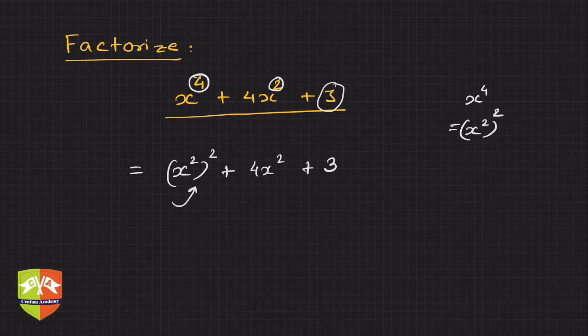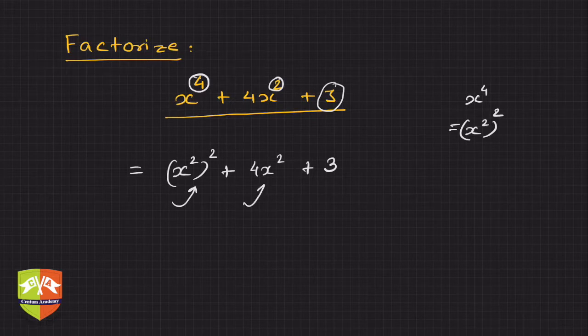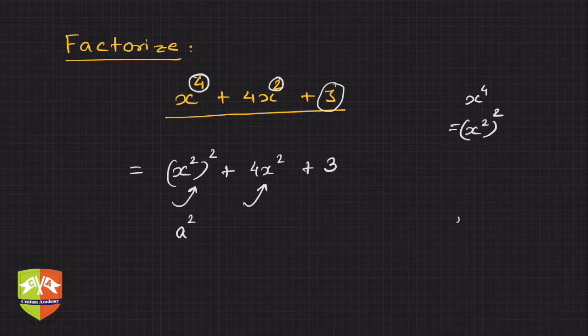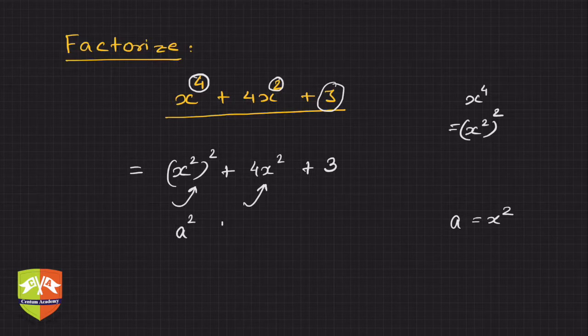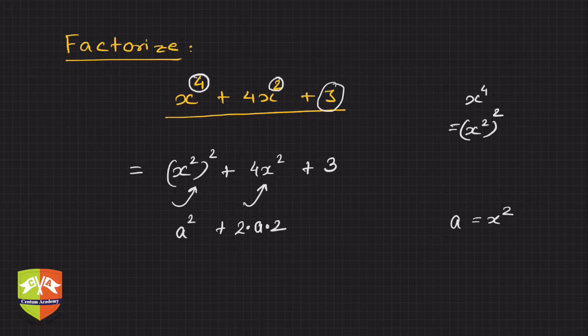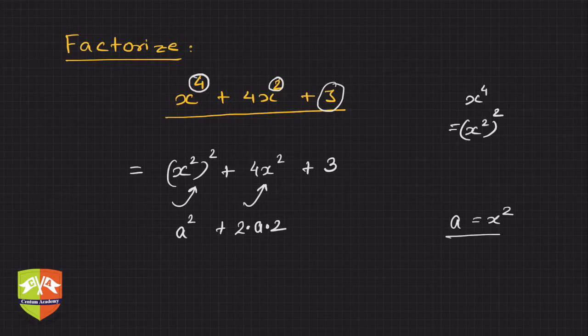The moment I see this squared, I am tempted to convert this into 2ab form. If you see, this looks like a square. If you consider a to be x squared, then this looks a square. Plus this 4x square, I am tempted to write this as 2 into a into 2, where x square is a. Keep this in mind.